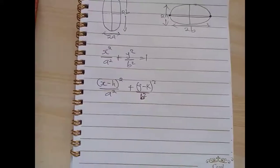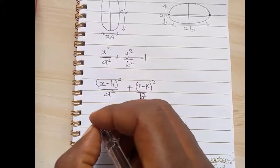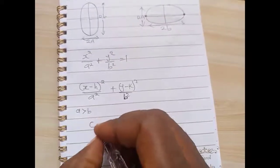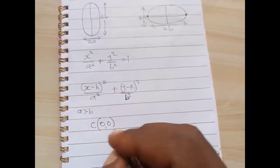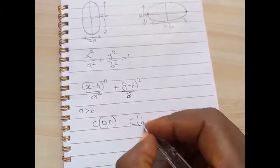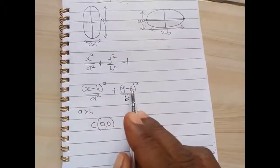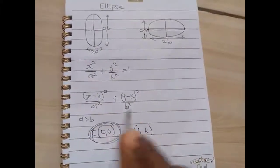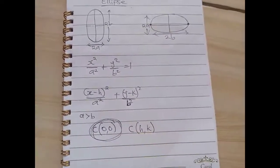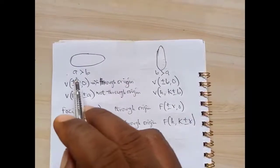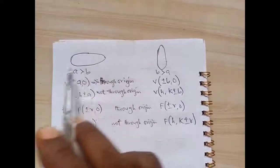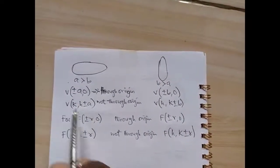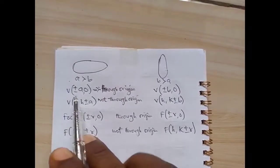When the ellipse starts from the origin, we have formulas for the vertex, center, and foci. When it passes through the origin, the center is (0, 0), because the general formula for center is (h, k). Sometimes the value of a can be greater than b, giving a horizontal ellipse, and when b is greater it gives a vertical ellipse.